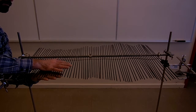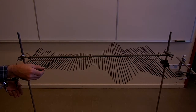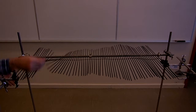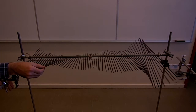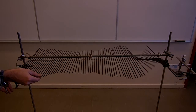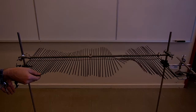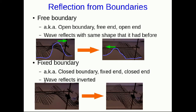And if you now watch a crest travel down — look — it flips and becomes a trough when it returns. And if I send a trough down, then it flips and becomes a crest as it returns. So as we've just seen, when we have a fixed boundary, the wave reflects still, except it flips — it becomes inverted when it reflects.